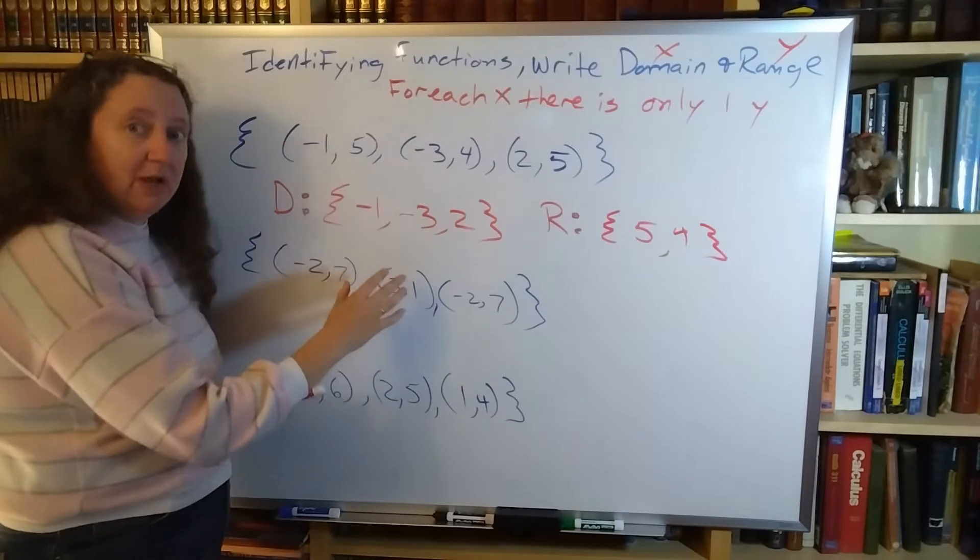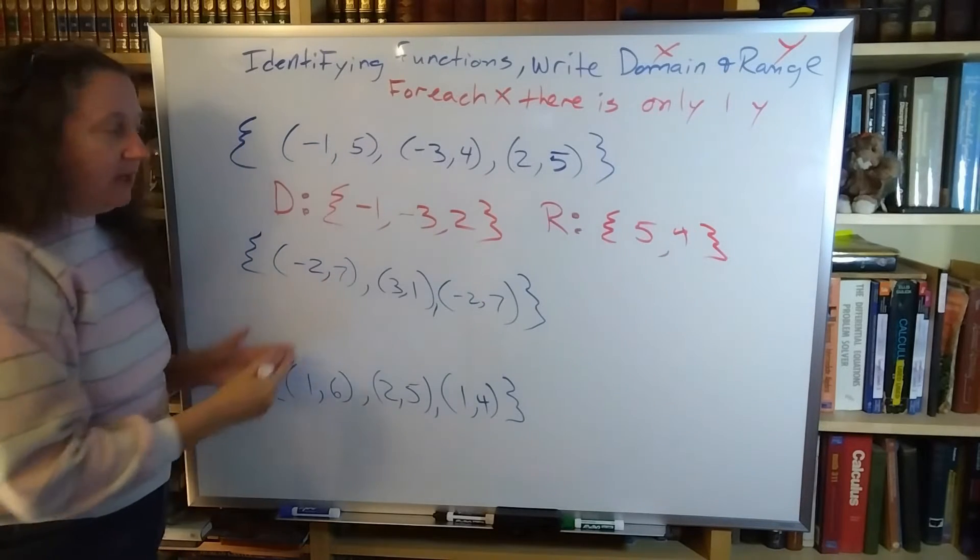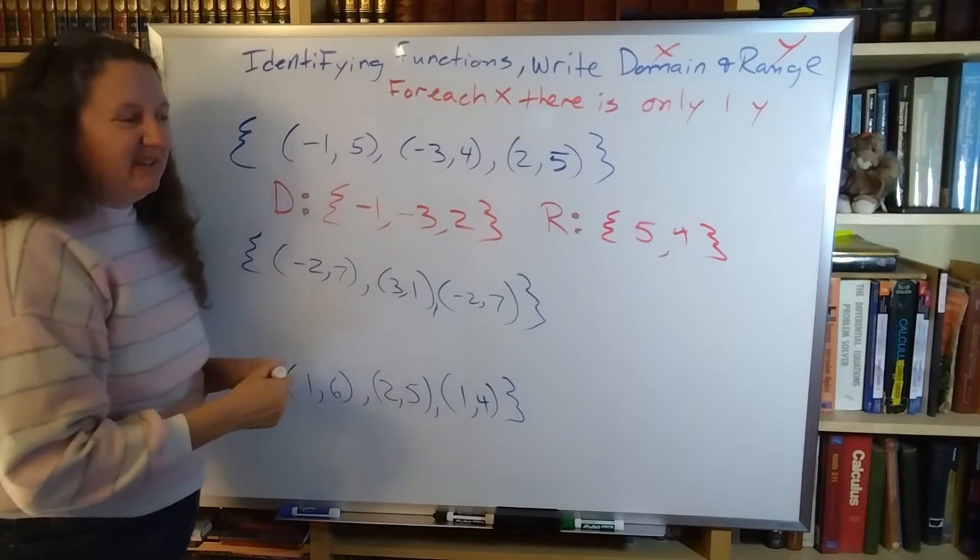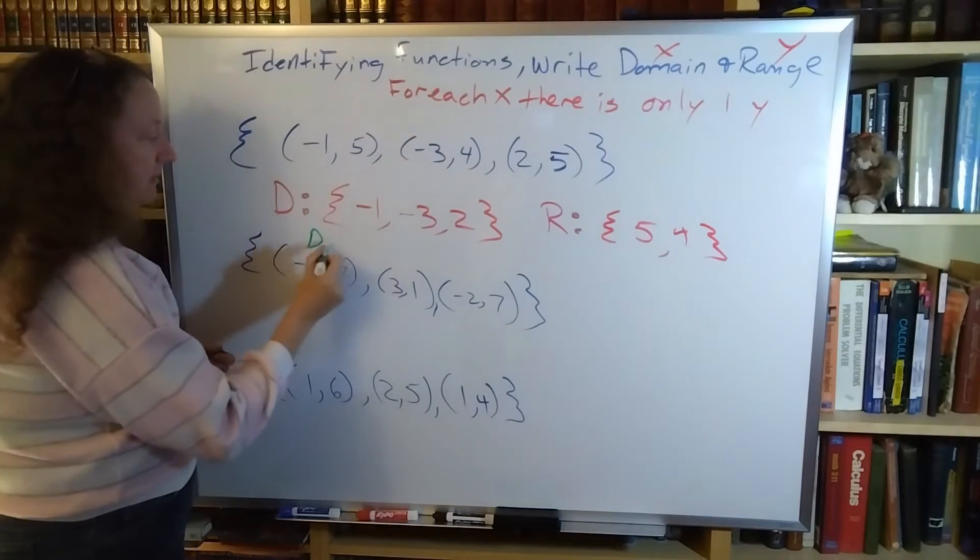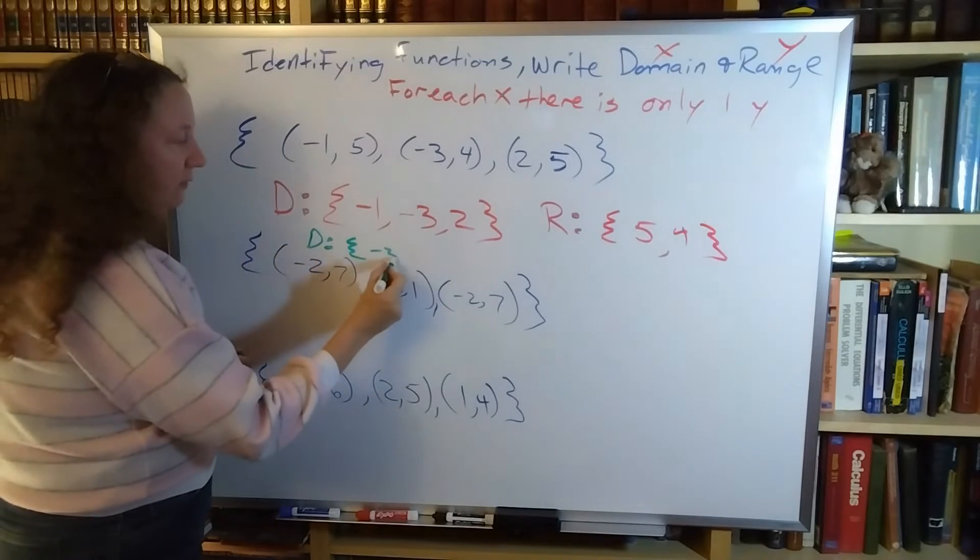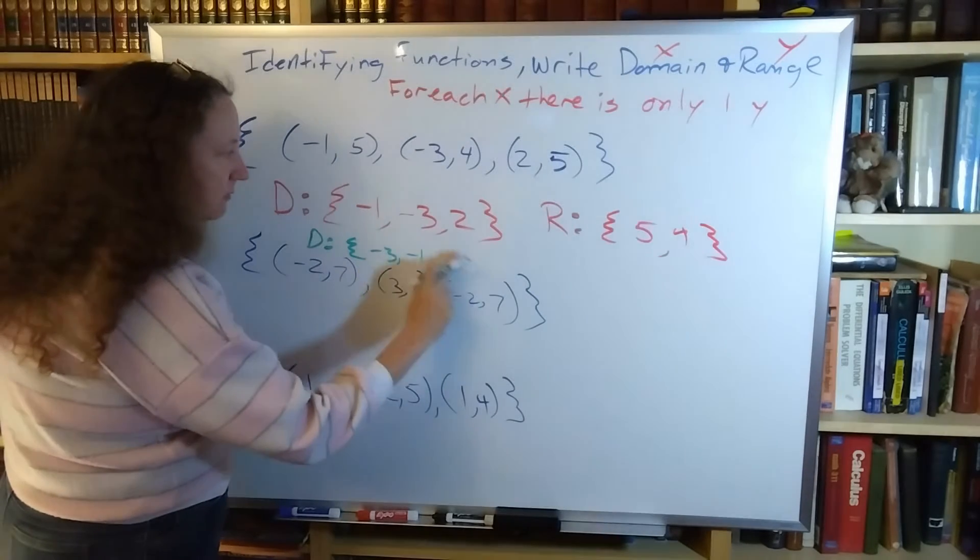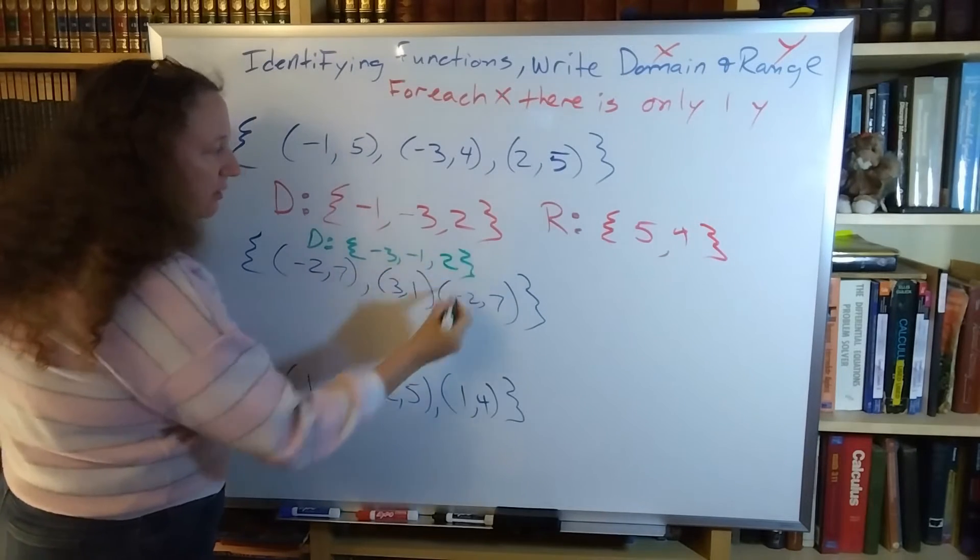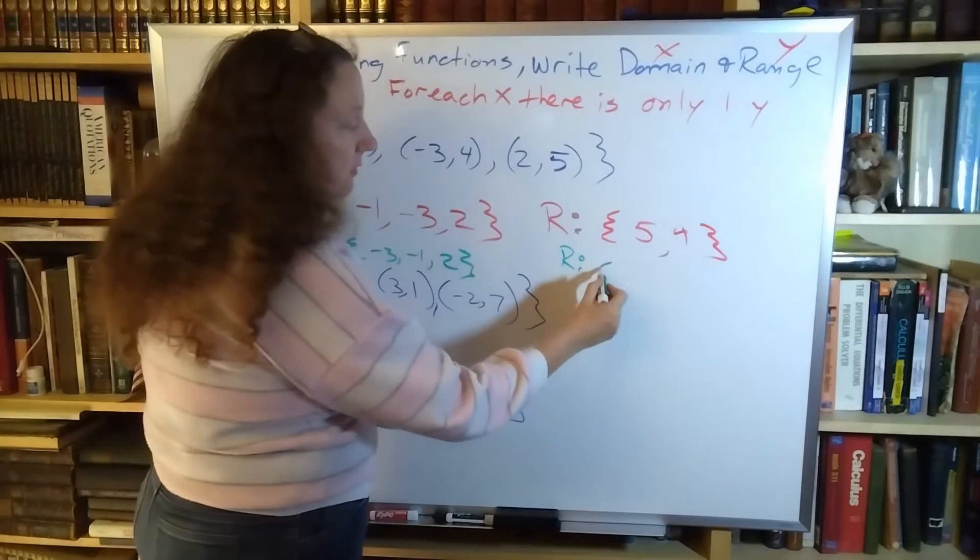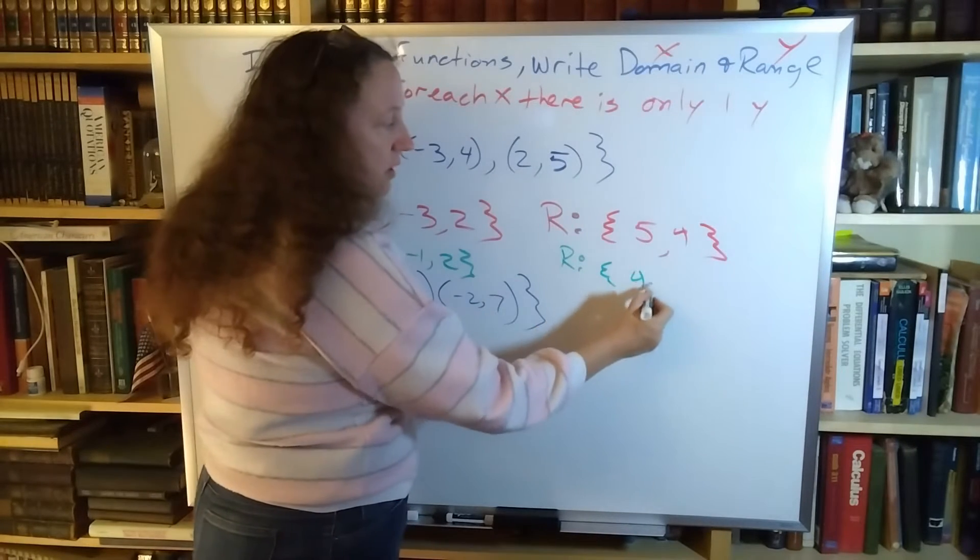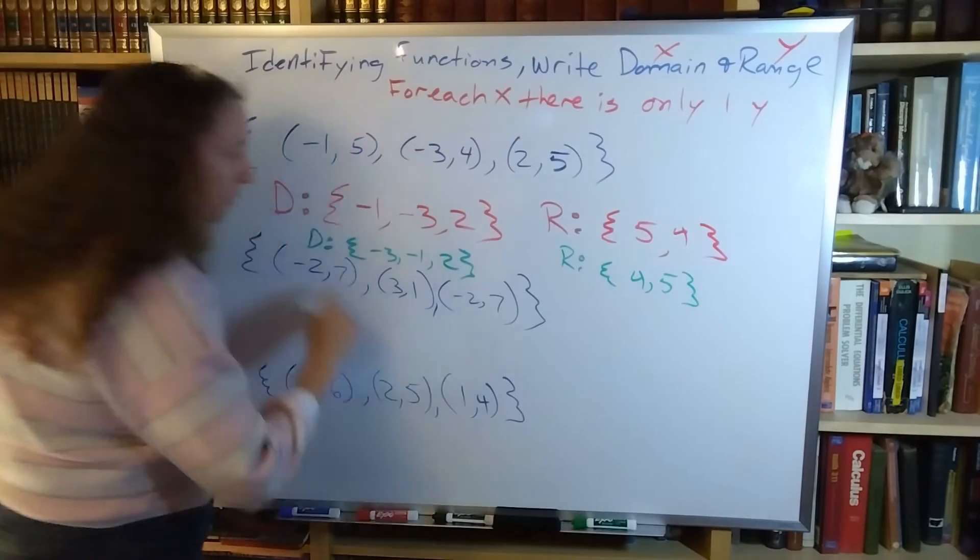This is not the best way of writing this. The best way would be to have it in order from negative 3 to negative 1 to positive 2, but this is acceptable - it's ugly but correct. So the better answer would be domain is the set of numbers {-3, -1, 2}. The better answer for range would be to put these in order also: {4, 5}. Those are the better answers.